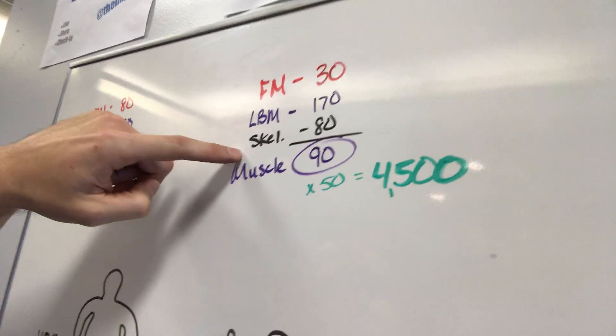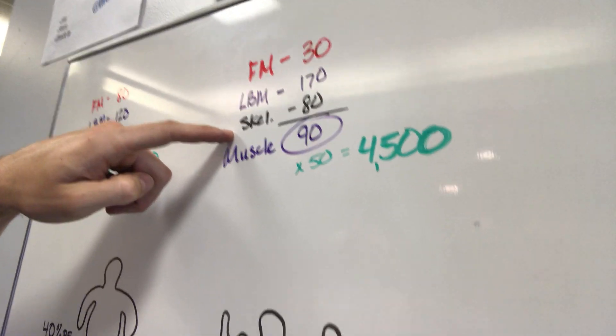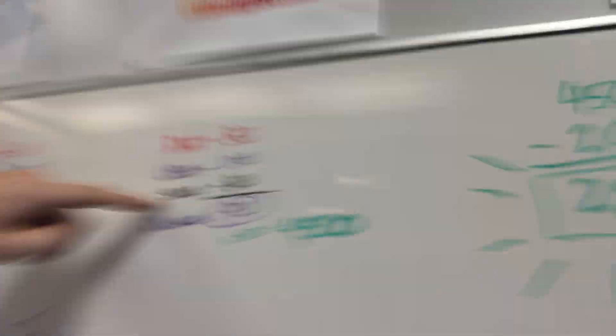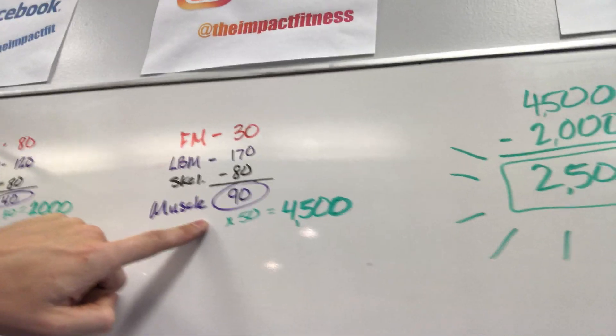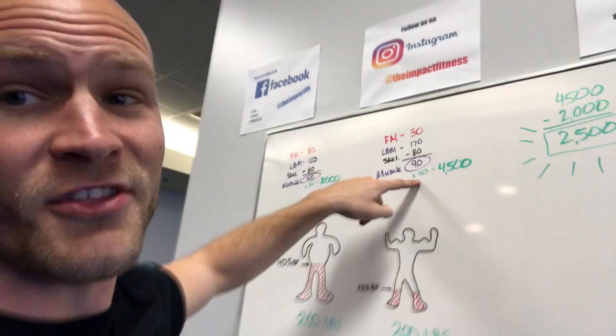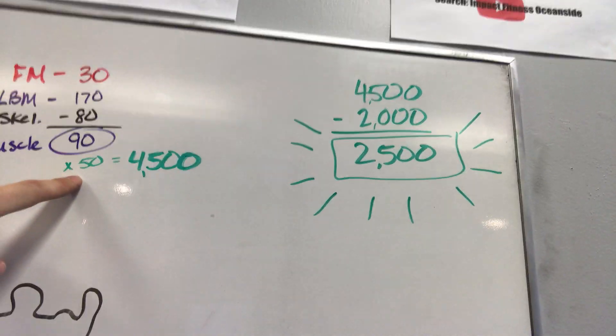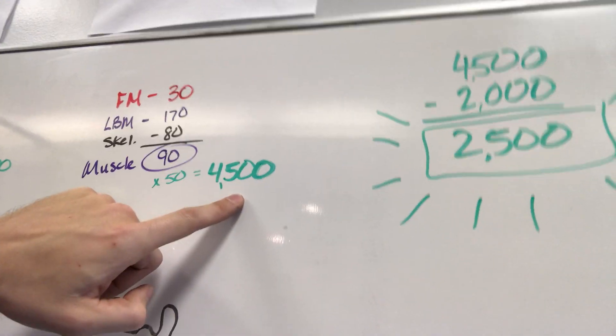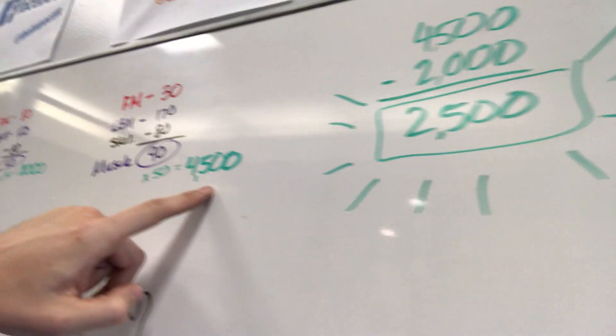So let's take away that same 80-pound skeleton. Whether that's true or not, I'm not sure, it's close enough anyways. So what's left over, 90 pounds, we'll call it 90 pounds of muscle, times your 50 calories per pound of muscle equals 4,500 calories this person is burning.